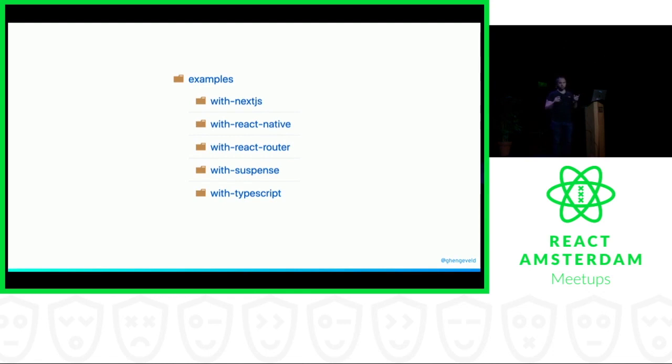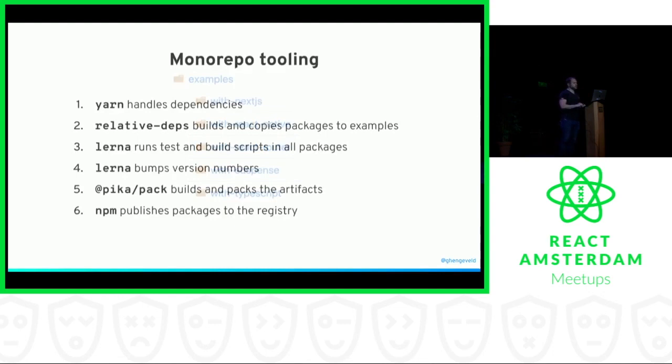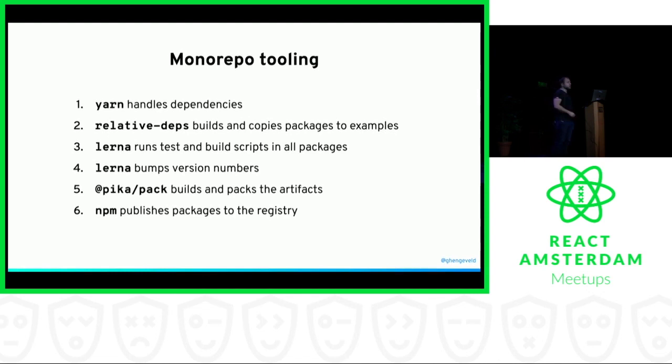All of the examples are also automatically deployed to Netlify so you can test there as well. All of this lives in a monorepo. React Async is just one repository on GitHub which contains the examples, but also at this point two packages: React Async itself, and React Async DevTools, which is a side package I built for it.